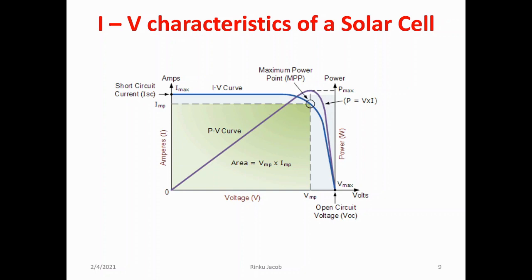IV curves provide the information required to configure a solar system so that it can operate as close to its optimal peak power point, i.e. MPP, as possible. The above graph shows the current-voltage characteristics of a typical silicon PV cell operating under normal conditions. The power delivered by a solar cell is the product of current and voltage. If the multiplication is done point for point for all voltages from short circuit to open circuit conditions, the power curve is obtained for a given radiation level.